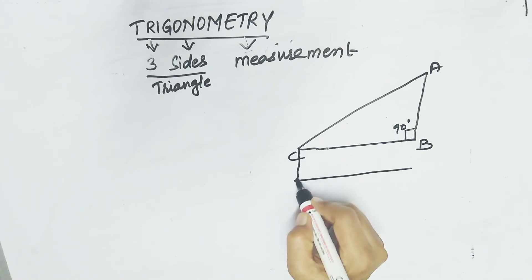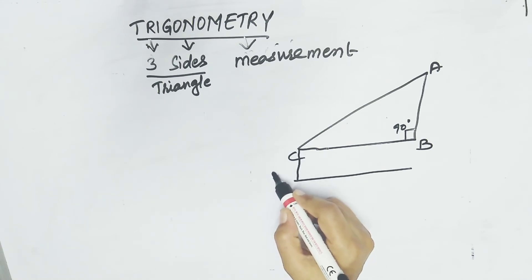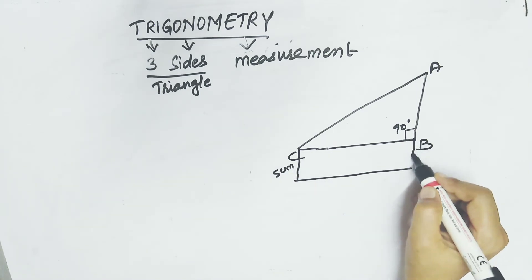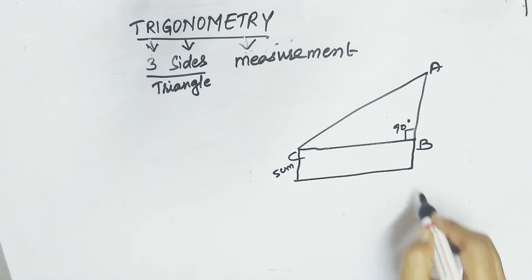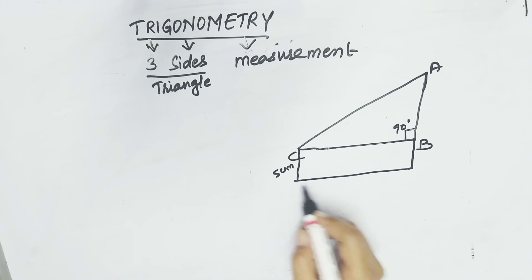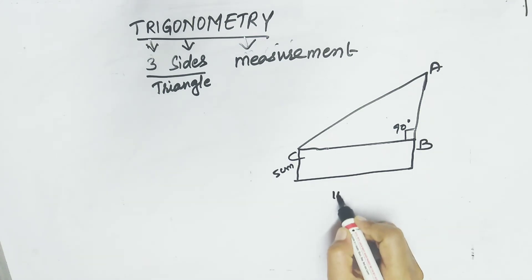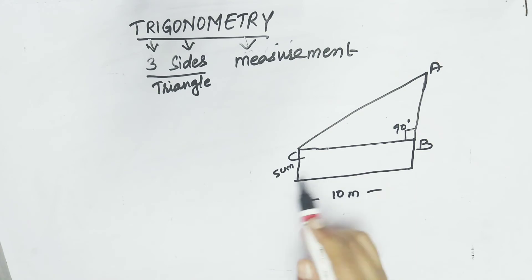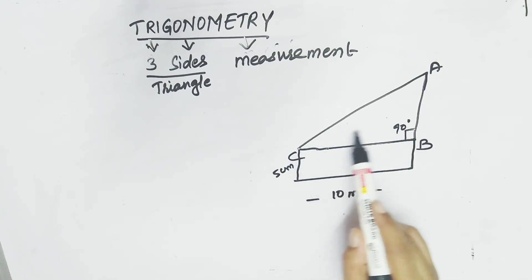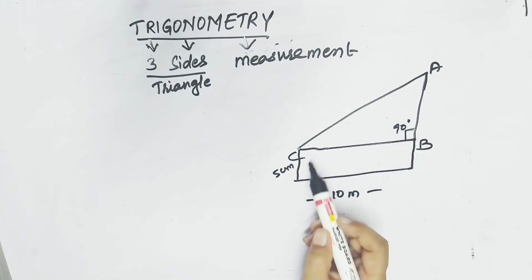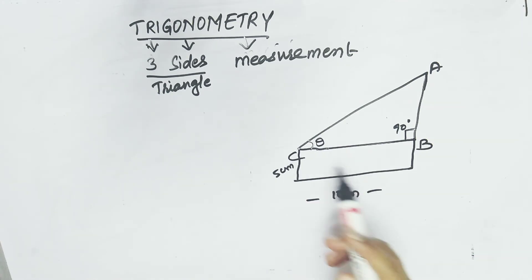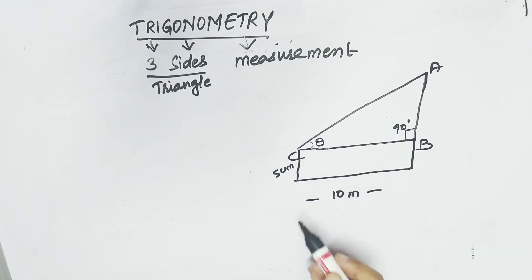Suppose point A is at ground level. A person is standing here, and this is the height of your school building. The distance between the person and the school building is 10 meters. If the person is standing here and looking at the top of the building, one angle is formed — that angle is called theta. Theta represents any angle.